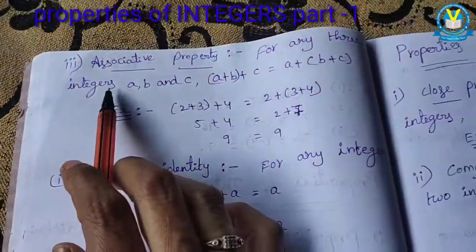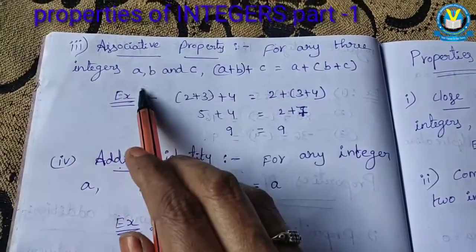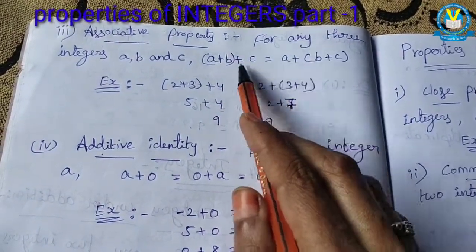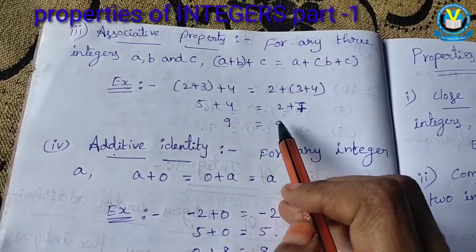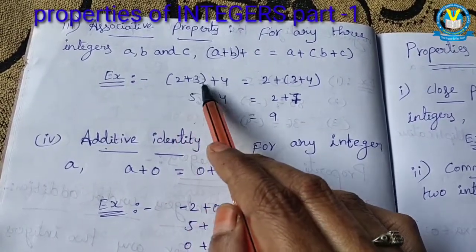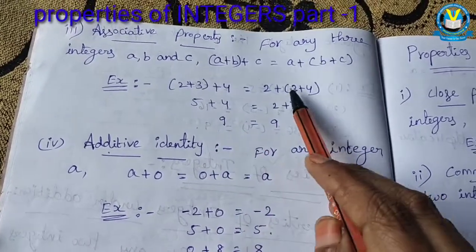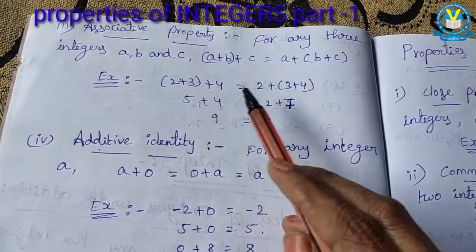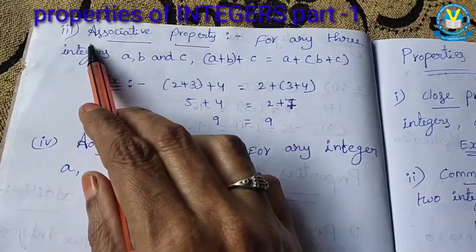The third one is associative property. For any three integers A, B and C, we have the condition: (A plus B) plus C equals A plus (B plus C). Here the bracket changes, but the answer we get is the same. Take the example 2 plus 3 plus 4: (2 plus 3) plus 4 = 5 plus 4 = 9. And 2 plus (3 plus 4) = 2 plus 7 = 9. The bracket changes but the answer is the same. LHS equals RHS. This is called the associative property.